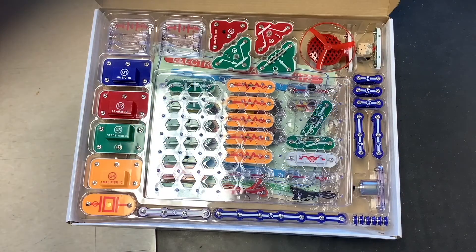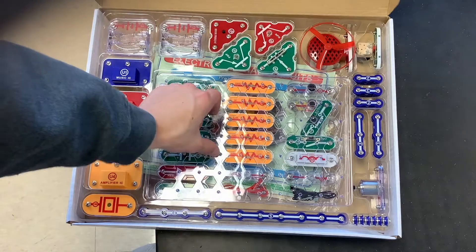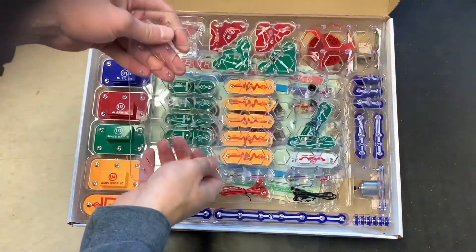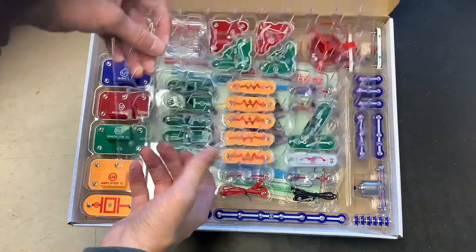So when you open the kit up, this is what it looks like. This piece right here is going to be your circuit board. It's what you're going to build all your circuits on.